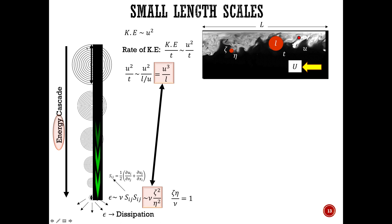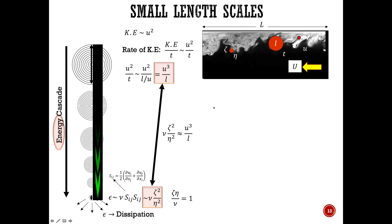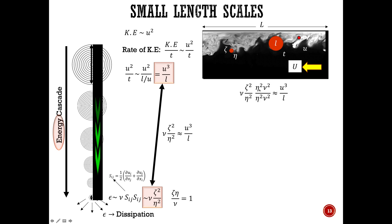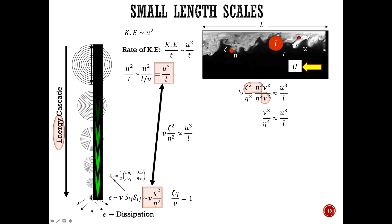Since energy flows continuously, if the rates are not proportional there may be energy accumulation, which we assume doesn't occur. So we equate the two expressions. To simplify, on the left-hand side multiply by length scale squared times kinematic viscosity squared. Then zeta times eta over nu — squared — is the Reynolds number at the smallest length scale, which equals one. This gives us: nu cubed over eta to the fourth power is proportional to U cubed over L.